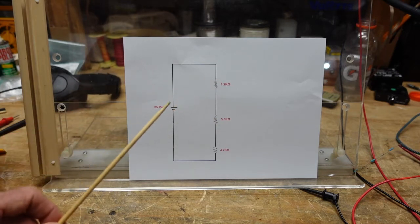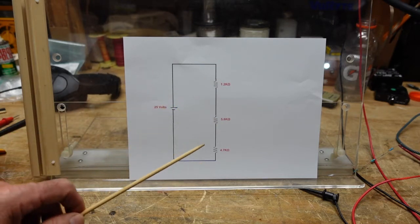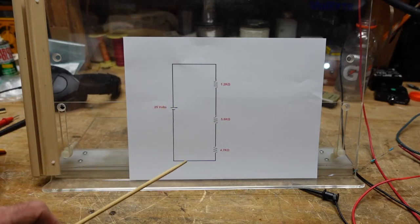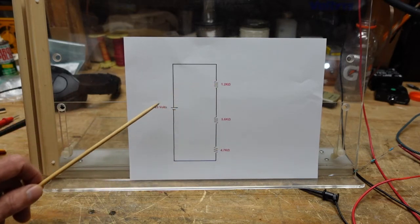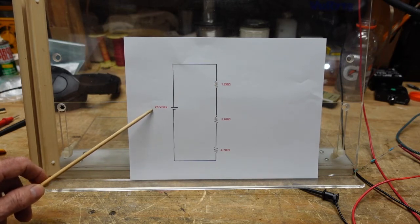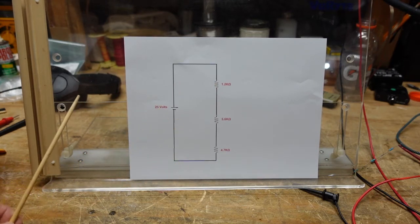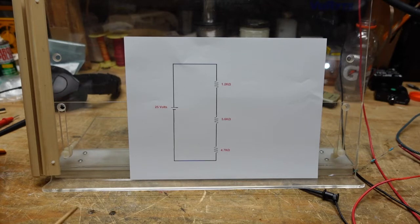So I'm going to show you how we calculate the current and therefore how we can calculate the voltage drop and of course the sum of all the voltage drops should equal the source and I'll show you why it's probably not going to be exact. But here we go.